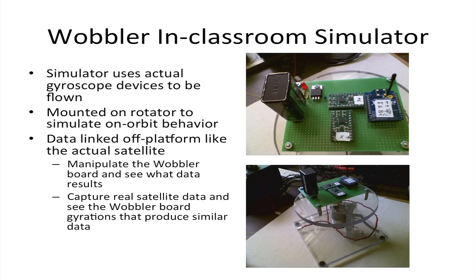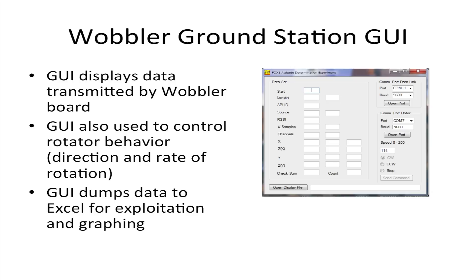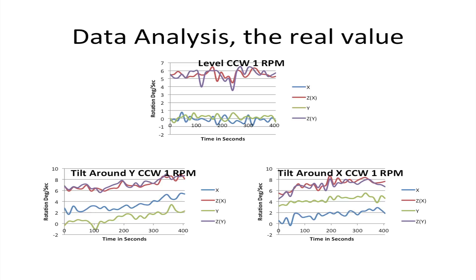Once students are simulating in the classroom, they should be prepared to actually receive data directly from the satellite and compare it to the real satellite's behavior. I've developed a simple GUI using XP modules where information from the simulator is dumped into the GUI and then into an Excel spreadsheet, displaying rotation rates in the X, Y, and Z planes.